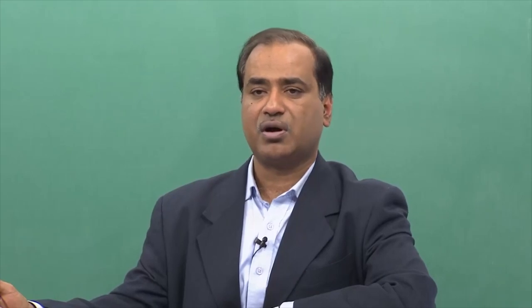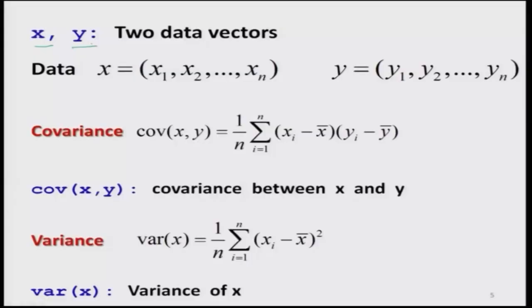This correlation coefficient depends on a quantity called covariance. Suppose we have two data vectors X and Y — for example, X can be the variable height and Y can be the variable weight. We are observing n observations: X1, X2, ..., Xn for height, and Y1, Y2, ..., Yn for weight. These are numerical values of height and weight respectively.